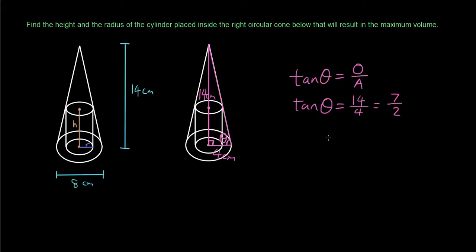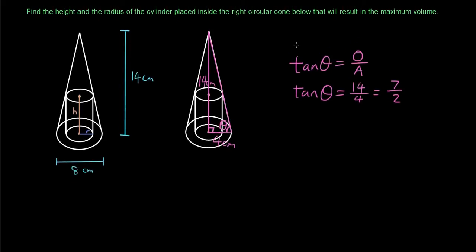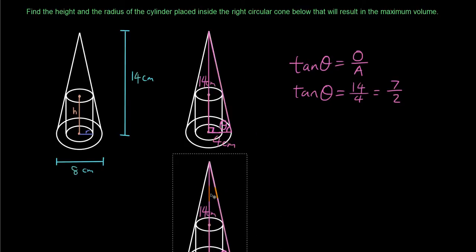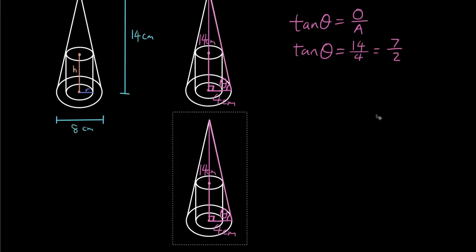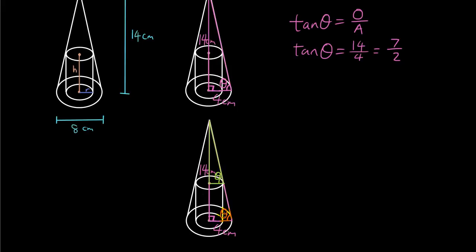I'm going to reproduce this diagram and show you something related to this. If I draw another triangle from the tip of the cone down to the top of the cylinder and form another right angle triangle there, then we have the same angle theta. This theta is the same as the theta in the original large triangle.